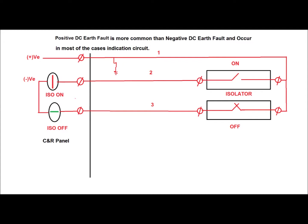In a substation, the positive DC earth fault is more common than the negative DC earth fault, because in most indication circuits the positive is taken to the yard side or substation side for taking isolator contacts or CB contacts — for breaker ON/UP indication in the control and relay panel, and for isolator ON/UP indication in the CRP panel. In this diagram, an isolator ON contact and isolator OFF contact is taken in the CRP panel for indication purpose.